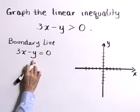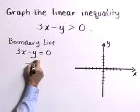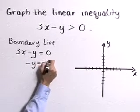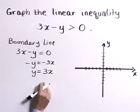I think I'll graph this by solving for y. If we subtract 3x from both sides, then we've got negative y is equal to negative 3x, or y is equal to 3x.